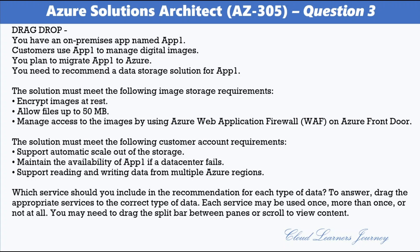Question 3. You have an on-premises app named App1. Customers use App1 to manage digital images, and you plan to migrate App1 to Azure. You need to recommend a data storage solution for App1. The image storage requirements are: encrypt images at rest; allow files up to 50 MB; manage access to images using Azure Web Application Firewall on Azure Front Door. The customer account requirements are: support automatic scale-out of storage; maintain availability of App1 if a data center fails; and support reading and writing data from multiple Azure regions.